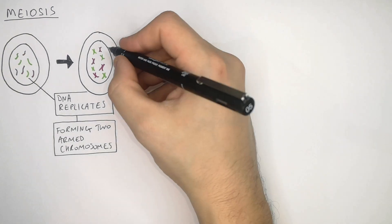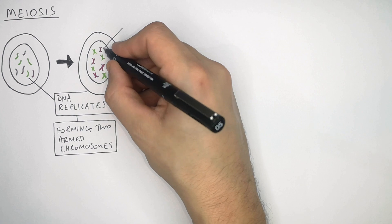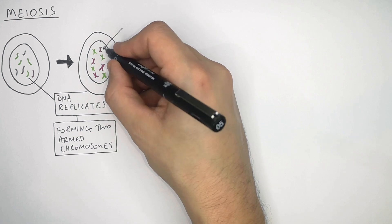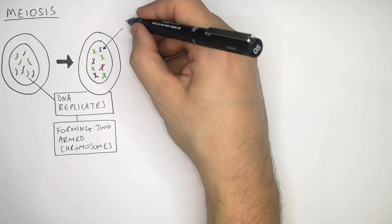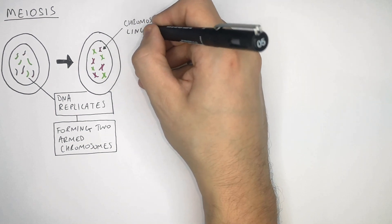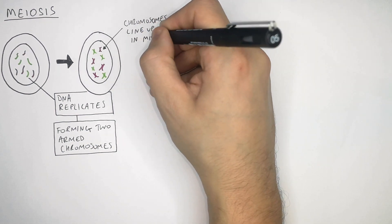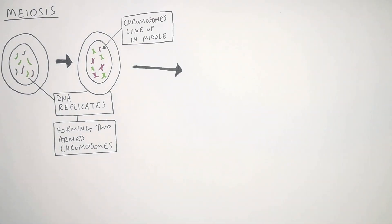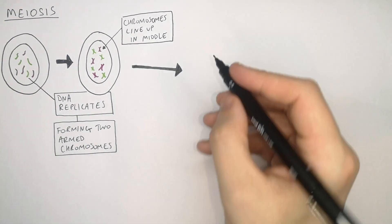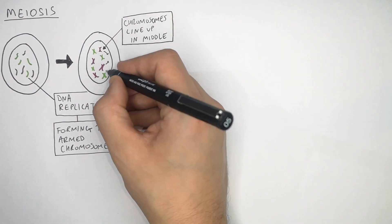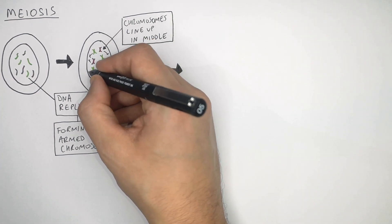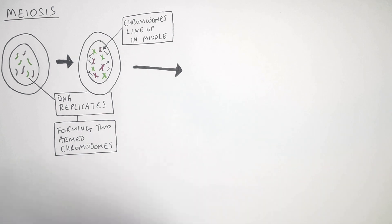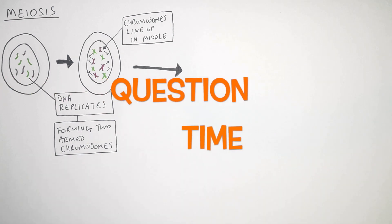Once the two-armed chromosomes have been formed, the chromosomes then line up down the middle of the cell. The chromosomes are then going to be pulled apart from the middle and pulled to the poles of the cell.